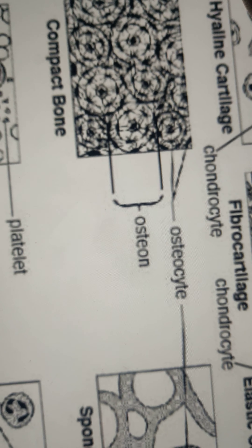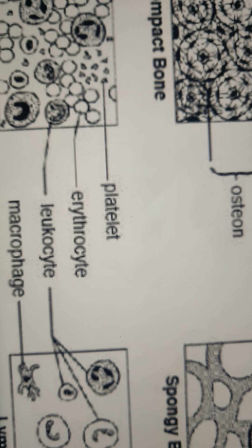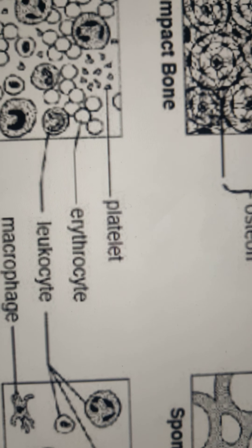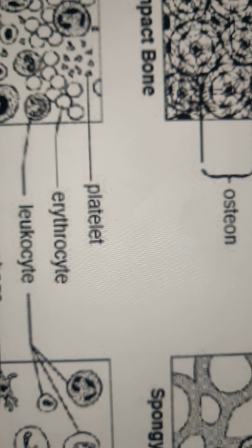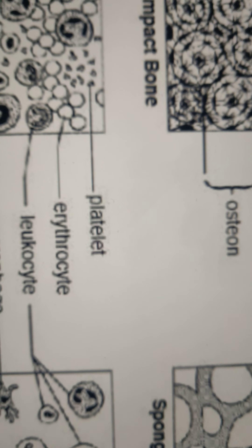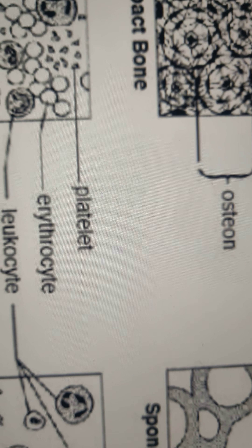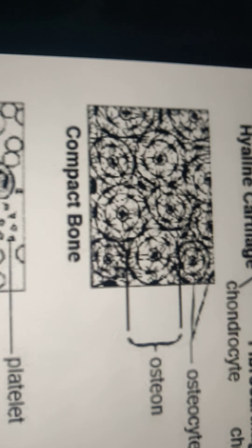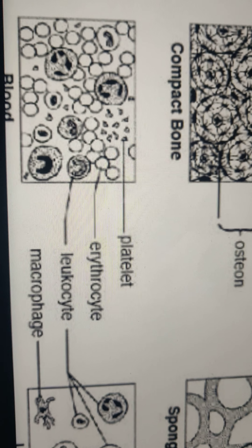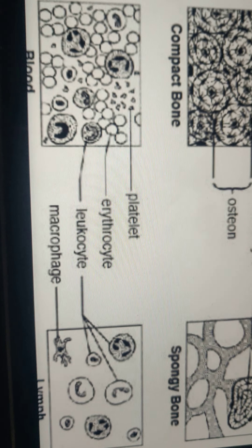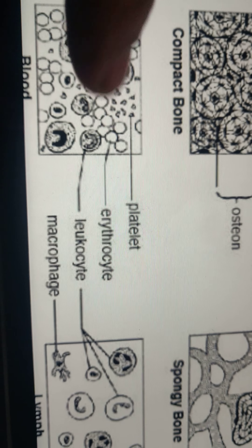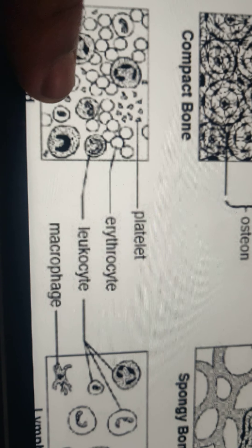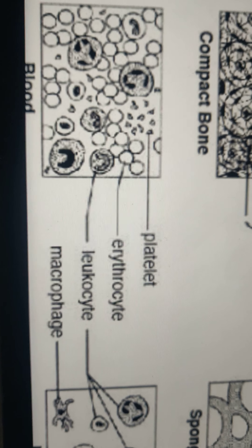Leukocytes also have a defense function and are associated with connective tissues. They are mainly seen during an infection when a pathogen is introduced into the body, and can be found primarily in the lymph and the blood.